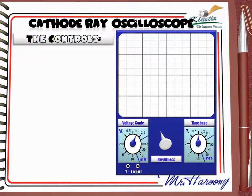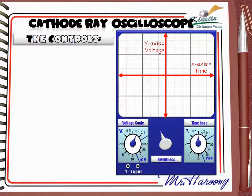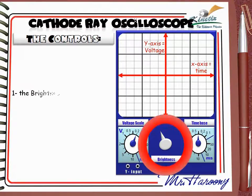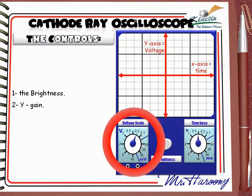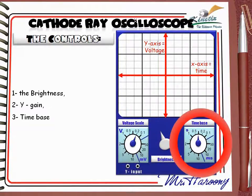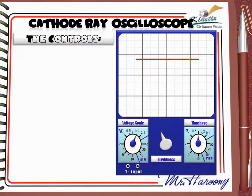الجزء من الـ oscilloscope اللي بيستقبل السيجنال الخارجية هو الـ Y input. بالنسبة للـ screen، الـ CRO بيرسم تغير الـ Voltage مع الـ Time. الـ Y axis في الـ screen بيمثل الـ Voltage، بينما الـ X axis بيمثل الـ Time. من أهم الأزرار: الـ Brightness، الـ Voltage Scale أو الـ Y Gain، والـ Time Base.